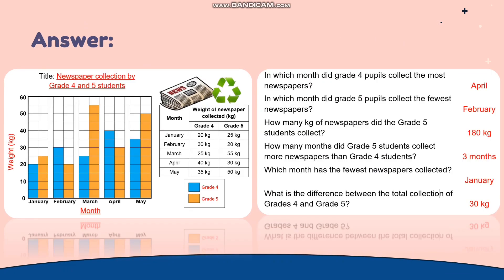Let's check your answers. In which month did grade 5 students collect the fewest newspapers? In February. How many kilograms of newspapers did grade 5 students collect? 180 kg. How many months did grade 5 students collect more newspapers than grade 4 students? 3 months. Which month had the fewest newspapers collected? In January. What is the difference between the total collection of grade 4 and grade 5? 30 kg.